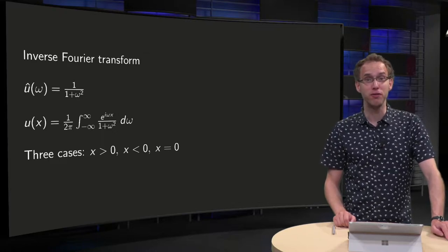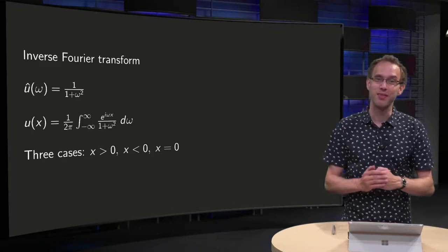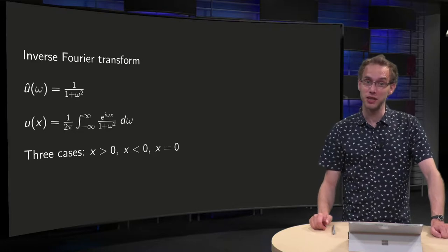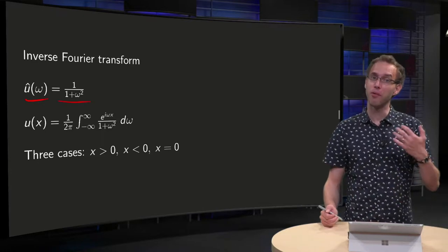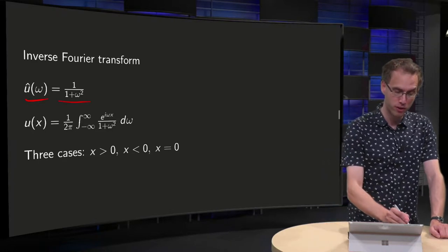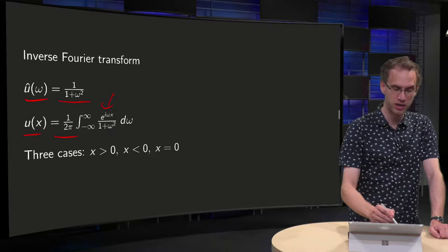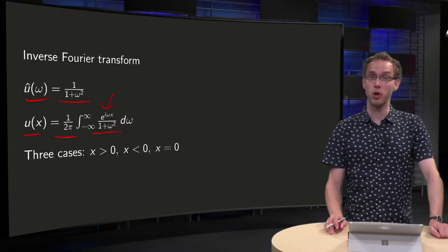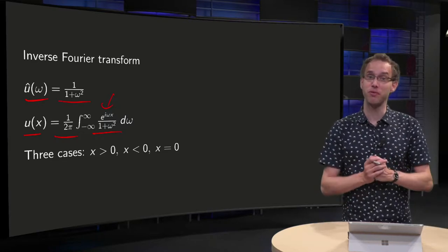If you want to compute the inverse Fourier transform of a function, you often need to compute a complex integral. Fortunately, we can often use the theorem of residues to compute these integrals. In this video you will see an explicit example. We have û(ω) = 1/(1 + ω²), and we want to compute the inverse Fourier transform: u(x) = (1/2π) ∫ e^{iωx} / (1 + ω²) dω. You already see that this will become nice if we try to use the theorem of residues.